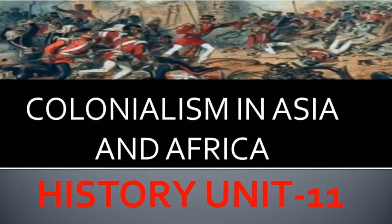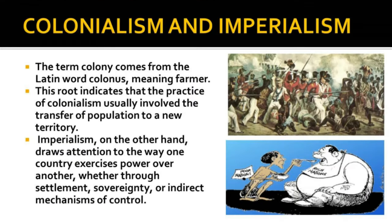History Unit 11: Colonialism in Asia and Africa. Colonialism is a process of domination involving the subjugation of one people by another. The term colony comes from the Latin word 'colonas', meaning farmer. This indicates that the practice of colonialism usually involves the transfer of population to a new territory, where the arrivals lived as permanent settlers while maintaining political allegiance to their country of origin.